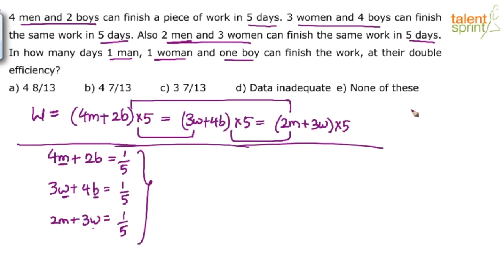Once you get the capacities, you add the capacity of a man + capacity of a woman + capacity of a boy to get the total capacity, then reciprocate to get the total number of days. However, if you look at the equations in a smart way, you can solve this question without having to find the individual capacities at all.